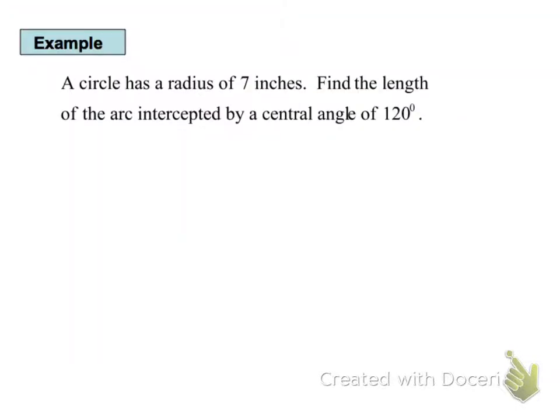So here's our example. A circle has a radius of 7 inches. We're going to find the length of the arc with an angle of 120 degrees. Now, the first thing to remember is that 120 degrees, that's degrees, we said our angle had to be in radians. So the first step here is going to take our 120 degrees, and we're going to have to switch it into radians.